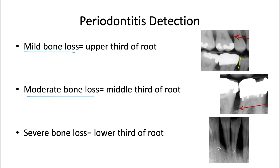Moderate bone loss refers to bone loss where the bone level is at the middle third of the root — greater than 2 millimeters of bone loss at this stage. Then of course we have severe bone loss, which is going to be the lower third of the root. We can break this up into thirds: upper, middle, then lower. For severe bone loss, we'll most often see this appear first in the mandibular anterior region, since calculus tends to form there quickest and bone is rather thin in that area. These are examples of severe bone loss where it's encroaching on the apices of those teeth.